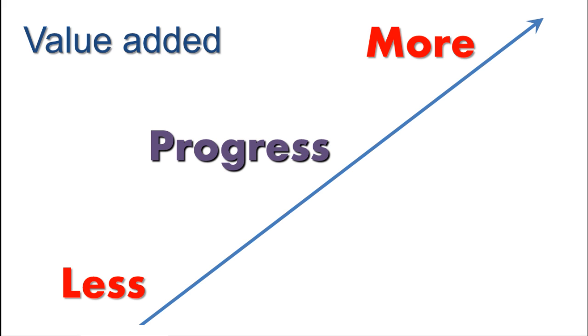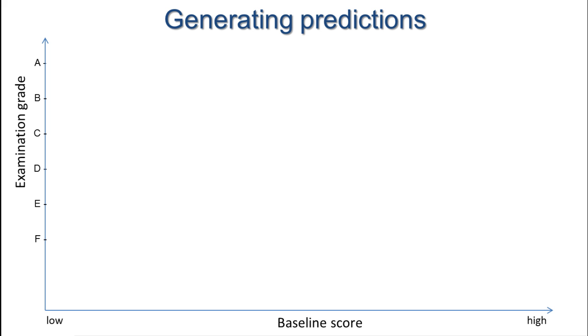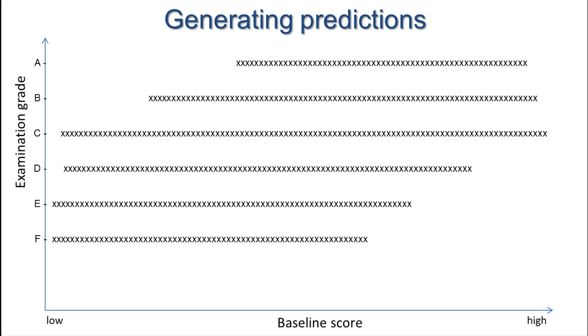First of all, how do we generate predictions in the first place? Suppose we have a baseline of some sort from which we wish to make predictions. That could be a score from a baseline assessment, or could be a score derived from previous examinations taken by the students. So for example, average GCSE attainment could be used as a baseline, as it's a good predictor of attainment at A level two years later. And let's suppose we have a final exam with grades A to F. Let's plot baseline score against final grade.